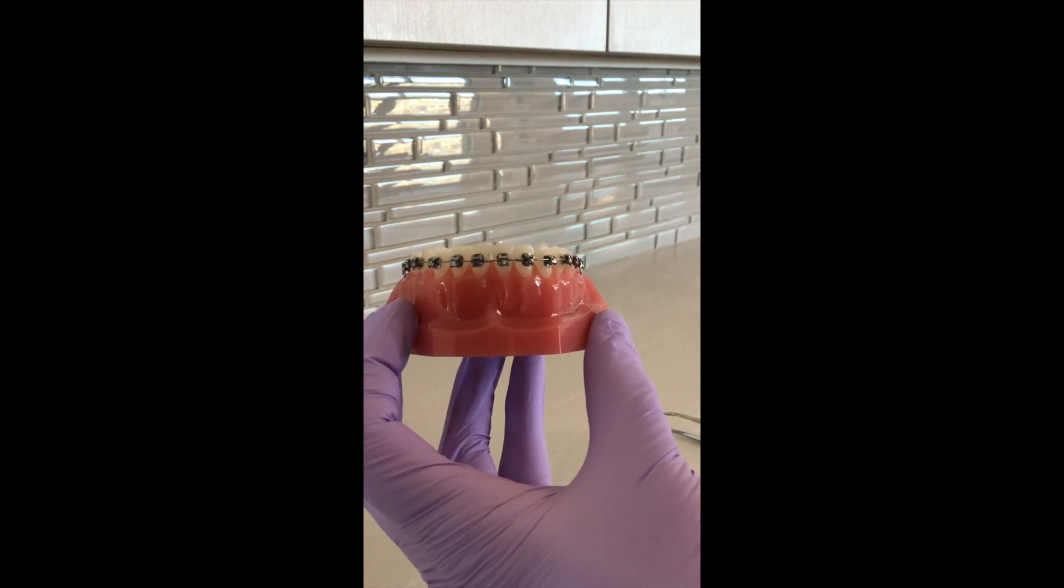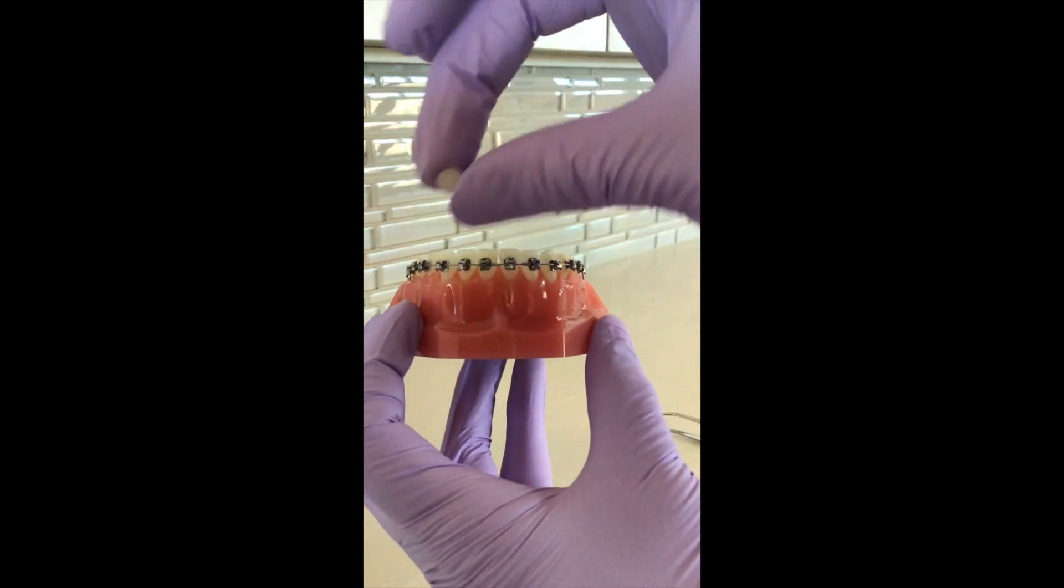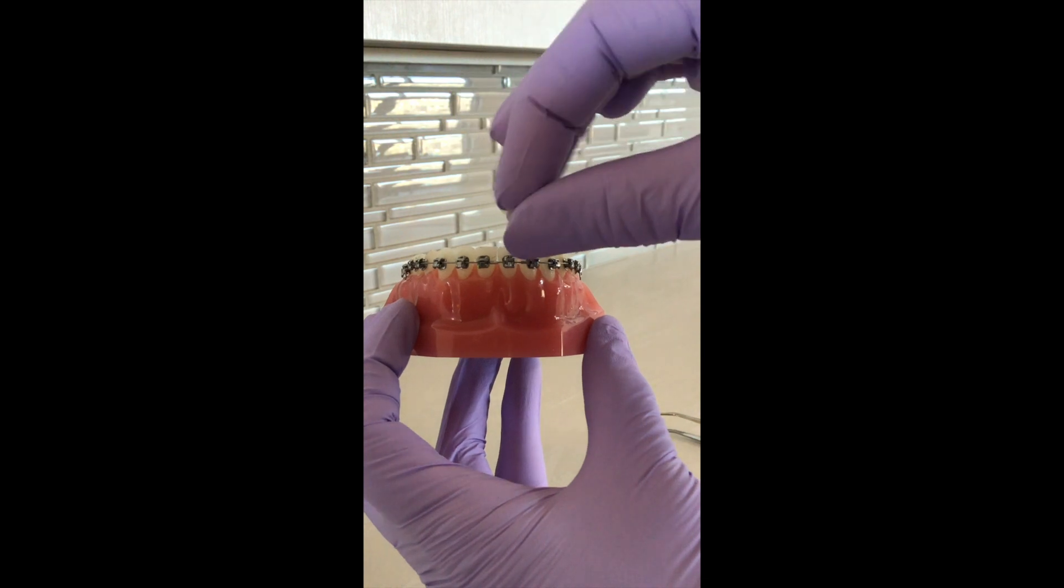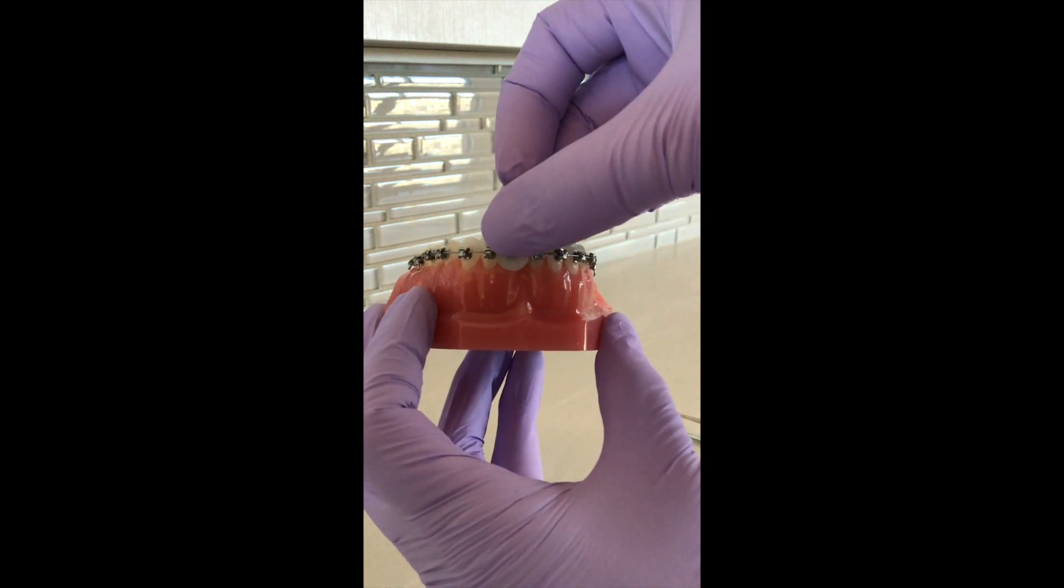If you have a bracket that's sliding around anywhere on the wire, it can be any of these ones except for the very back. You can grab a little piece of orthodontic wax, rub it around in your fingers like this, and push it on to stabilize that broken bracket.